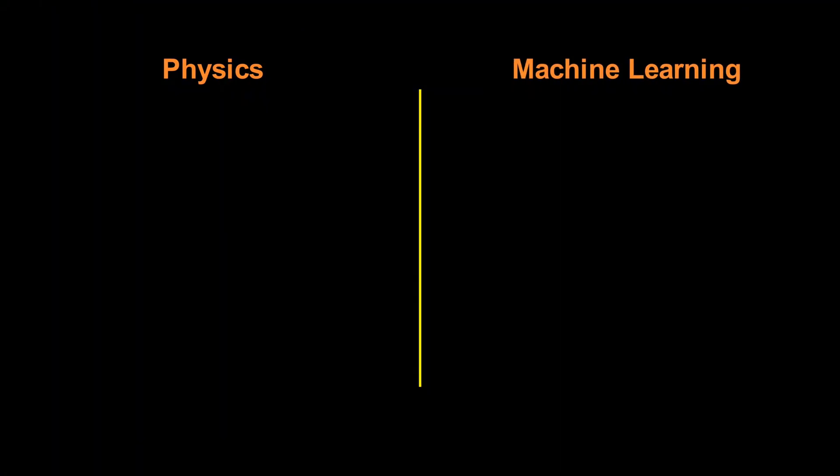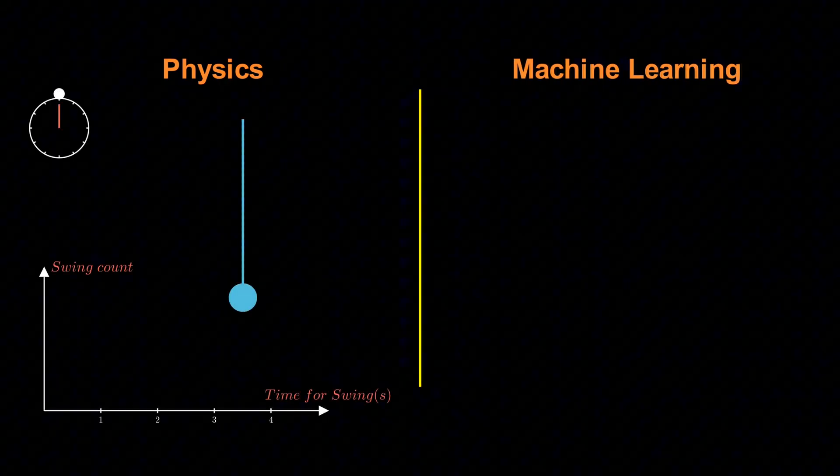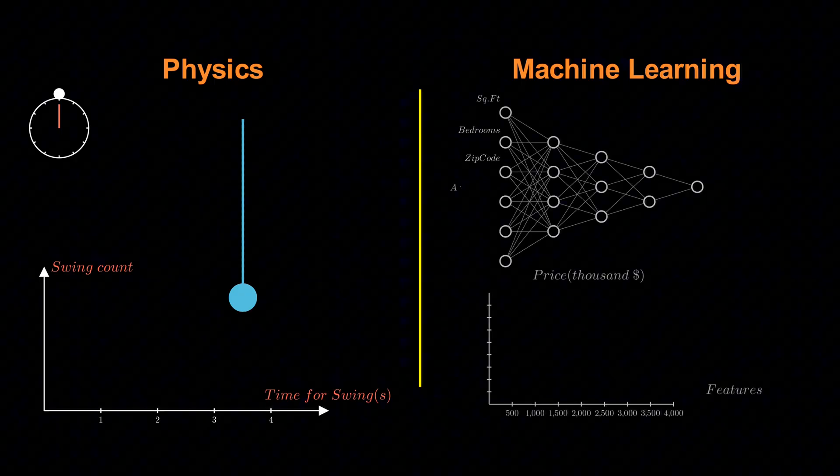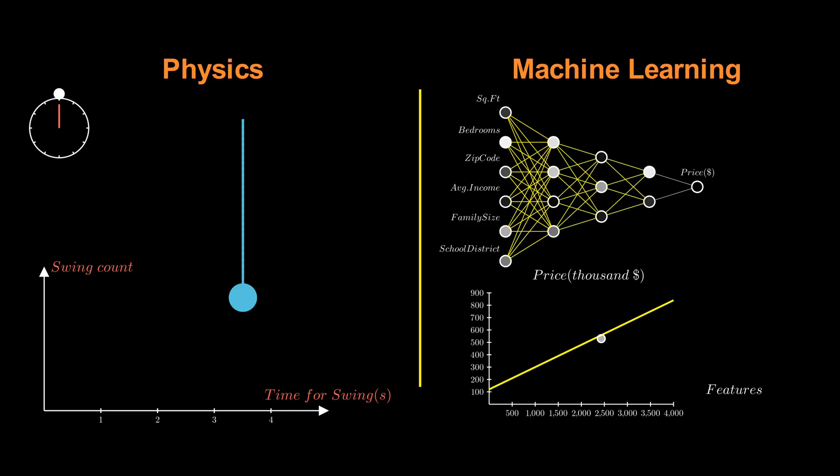This is not a purely machine learning idea. If you've done physics experiments, you already know these concepts. Bias and variance in machine learning are simply the systematic and statistical errors you've been calculating in physics labs for years.